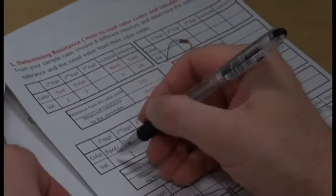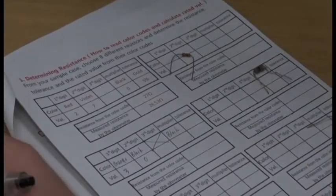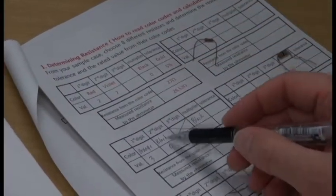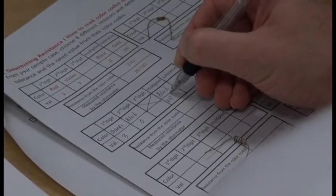Let's look up the colors and their numbers. Orange is three, black is zero. For the multiplier, 10 to the zero power is just one. The tolerance is gold.